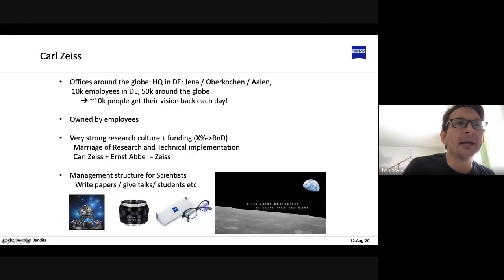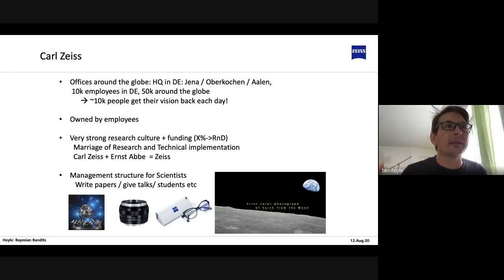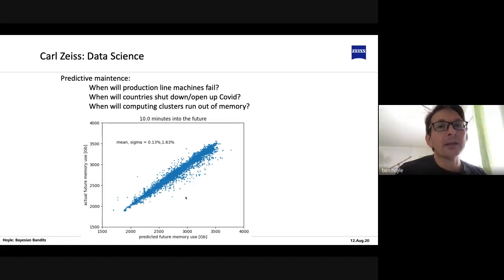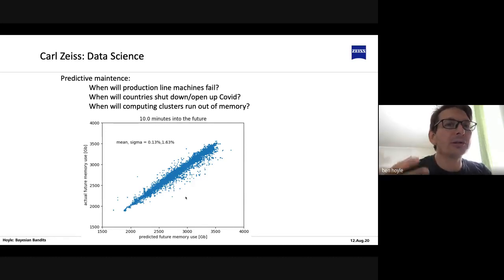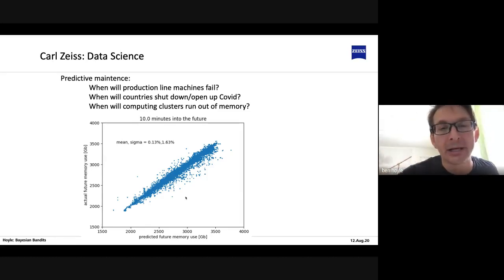There's also a management structure for scientists which is different from the standard structure — it actually allows you to keep doing science rather than filling out PowerPoint presentations all day. At Carl Zeiss we do predictive maintenance: we want to know when a production line machine will fail. We analyze incoming data streams to understand when some component might fail so we can ship replacement parts to the factory and keep production running for longer periods of time.